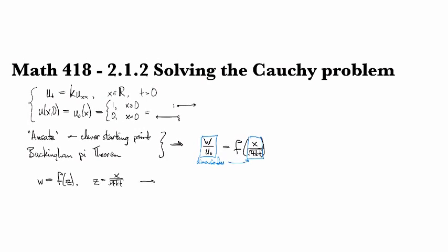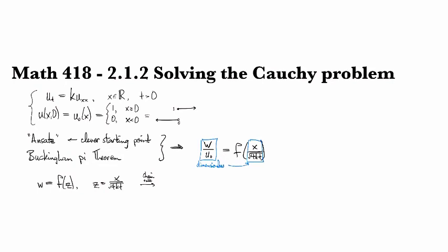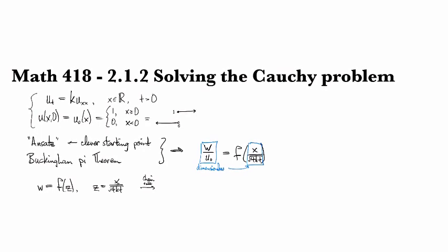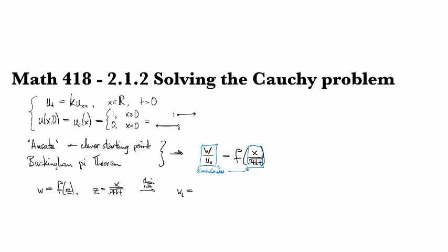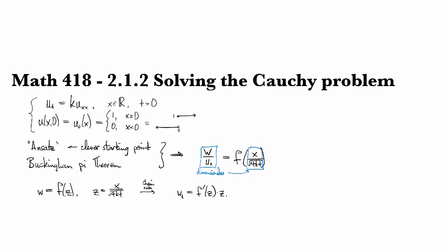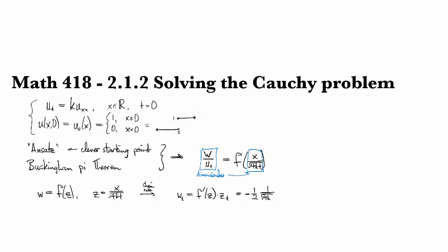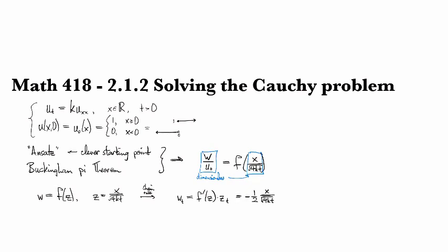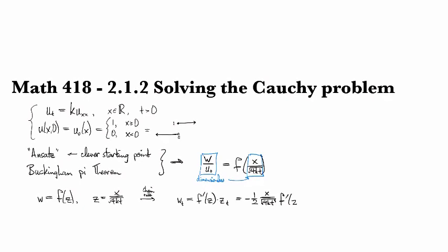Okay, well, then we can apply a chain rule to differentiate this and see what we get. So we need W sub T minus KW sub XX. So W sub T, that will require us differentiating this, and we'll see that's F prime Z times Z sub T, which is going to be minus 1 over square root 4KT, which is going to be minus 1 over 2 times 1 over square root 4KT times X. And, oh sorry, T cubed times X times F prime of Z.